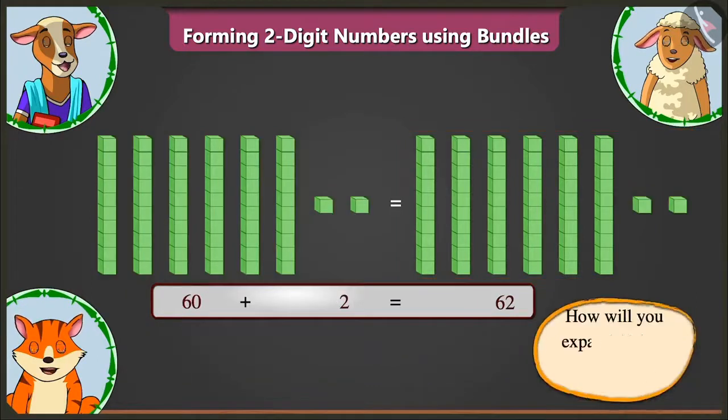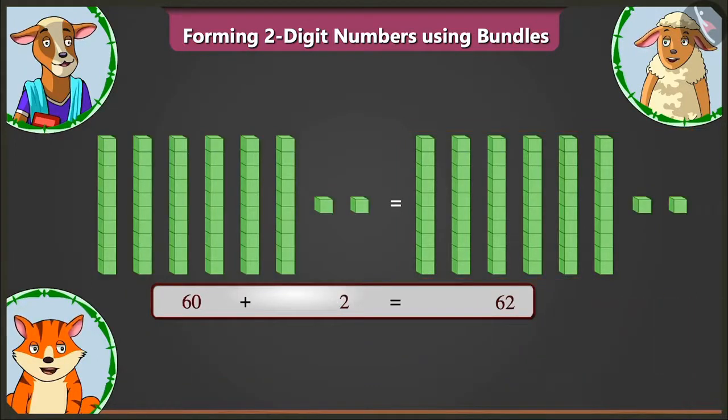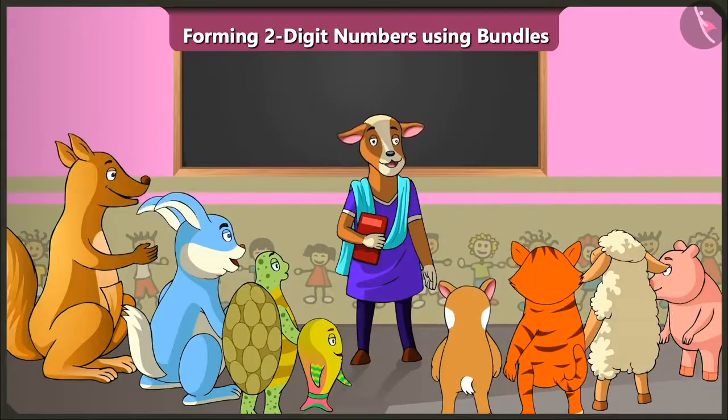Now, how will you expand 62 into two parts? 62 means six tens and two ones. That means the two parts will be 60 and 2. Absolutely right, Billy.